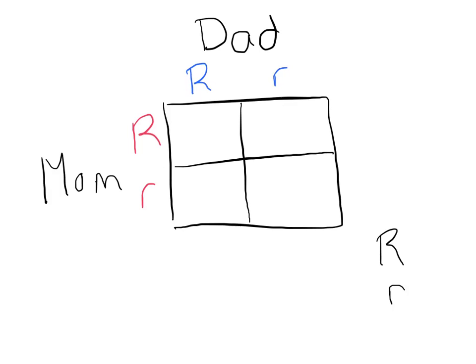We know that there's a 50-50 chance that a dad could donate a big R or little r. So we're going to pull our big R down to two of our four squares and our little r down to the other two squares. Then we're going to do the exact same thing with our mom, but we're going to pull across — pulling our big R across the two top squares and our little r across the next two squares.